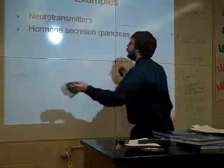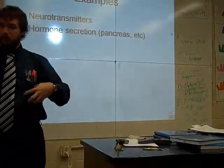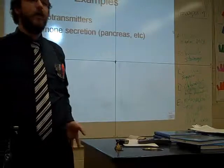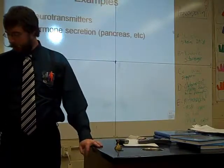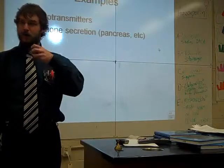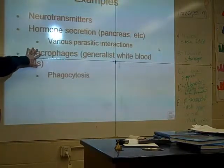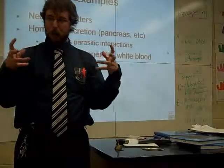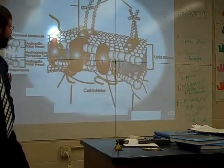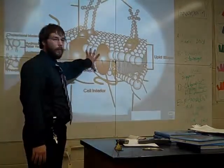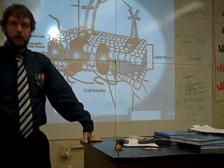With exocytosis, a vesicle full of stuff the cell wants to get rid of hooks up to the cell membrane, folds in, and shoves the stuff out. With endocytosis, the cell wraps the membrane around something it wants to bring in, pulls it down, and the vesicle pops off and moves through the cytoplasm along the cytoskeleton. Good examples are neurotransmitters and hormones - your pancreas dumps tons of hormones into your blood to control your heart and everything else. Macrophages, your white blood cells, engulf an entire bacteria through endocytosis. The question is: why are vesicles able to interact with the cell membrane this way? That question is your homework - let me know tomorrow when you come to class.